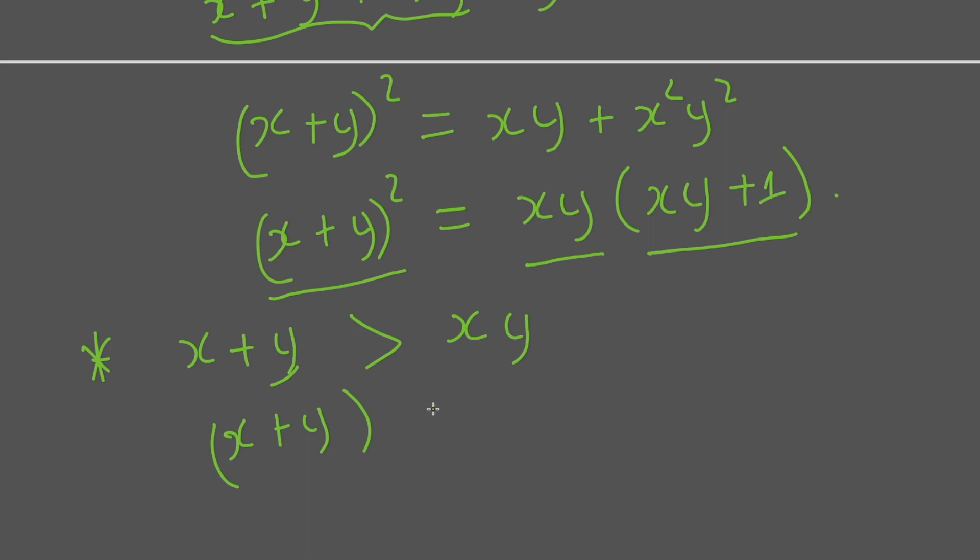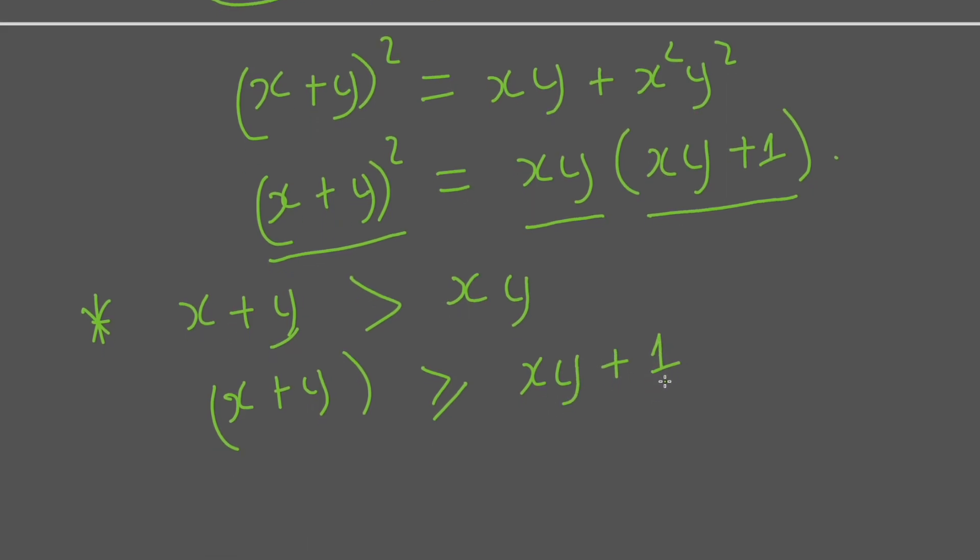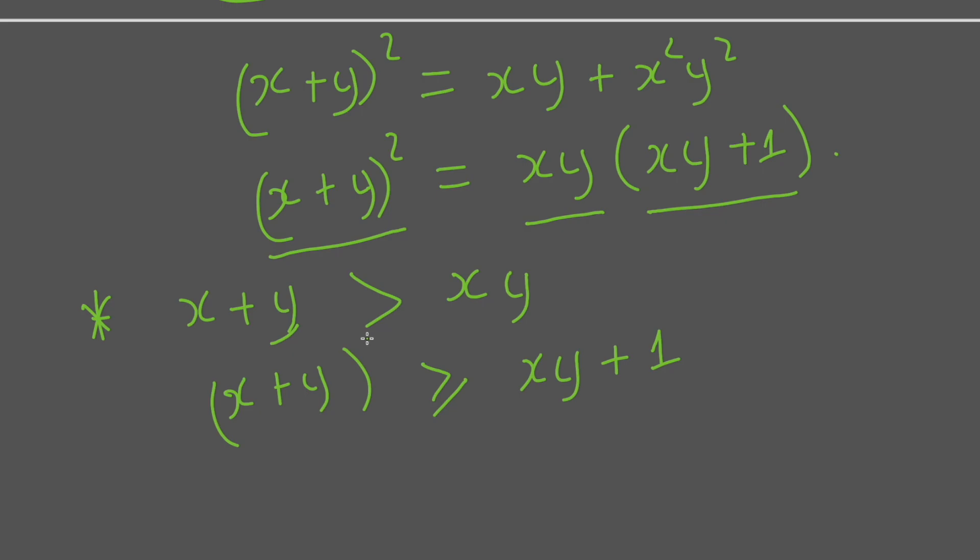then x + y will be greater than or equal to xy + 1. And this of course means (x + y)² will be greater than (xy + 1) multiplied by xy. So for the first case, this is impossible.